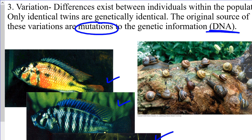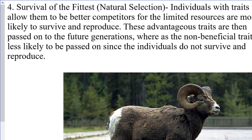Because individuals are all unique and different, they have different traits, and some are fitter than others — better suited to their environment. What makes them better suited is that they can better access the limited resources available. So we end up with survival of the fittest: individuals with traits that allow them to better access resources survive, reproduce, and pass that advantageous trait on to the next generation. Generation after generation, that trait becomes more common, while less beneficial traits become less common.